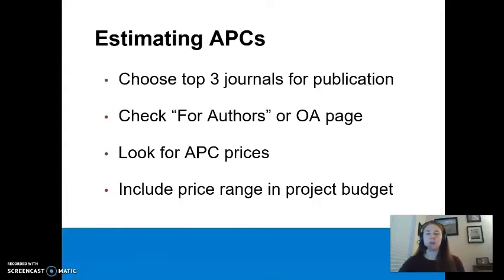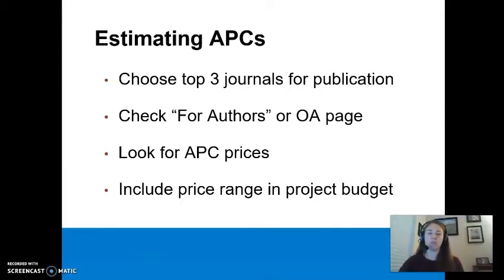Look at the for authors or open access pages of the journal website and find the APC fees. Include the price range of APCs for these journals in your project budget. Repeat this process for each article you expect to result from this grant. For example, if you expect to publish three articles resulting from this single grant, repeat this process for each article and include the total range of APC costs in the proposal.